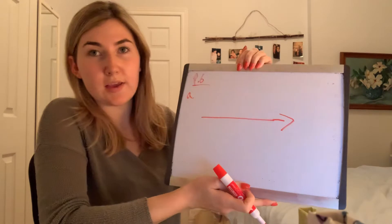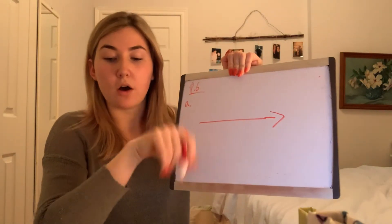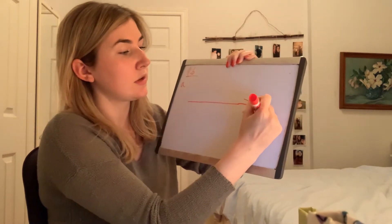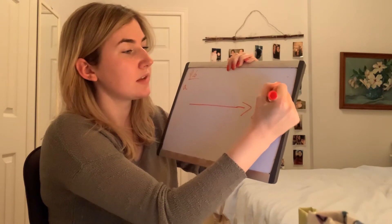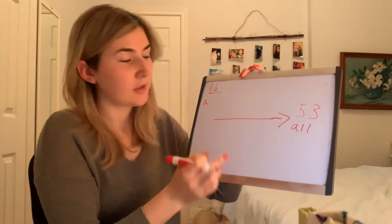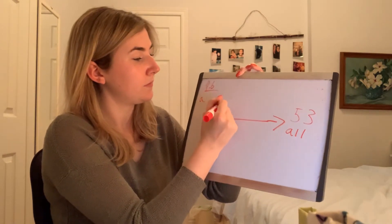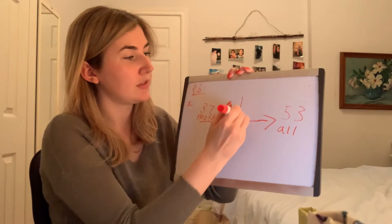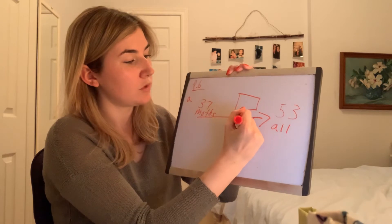So for part 6A we have a word problem: there were butterflies and moths in a jar. There were 37 moths in the jar. There were 53 insects in all. How many butterflies were in the jar? The keyword that popped out is the word 'all' — there were 53 insects in all. So our 'all' is always one of our big numbers. The other fact is 37 moths, which is one of our small numbers. We're looking for how many butterflies, which is our missing number.